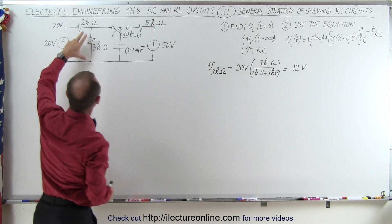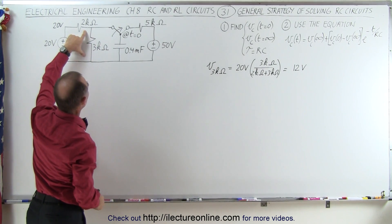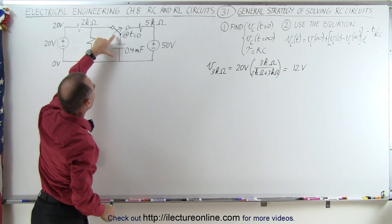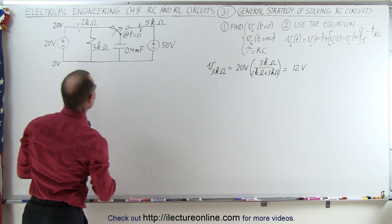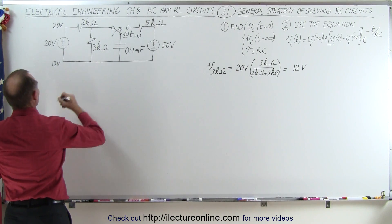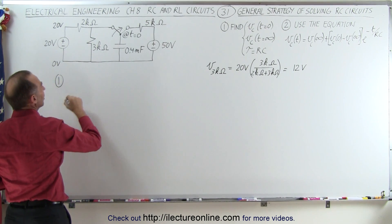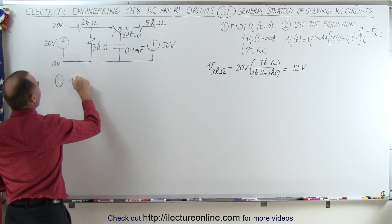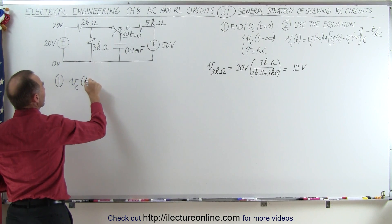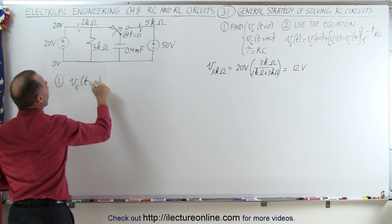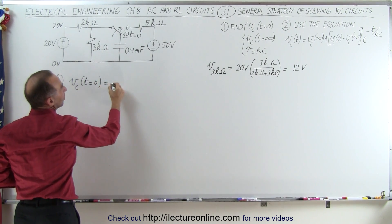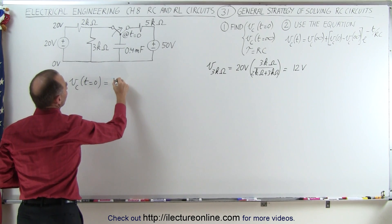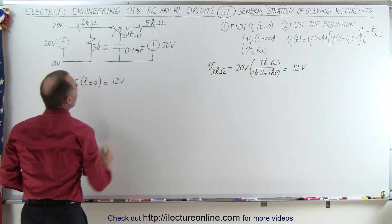That means if we have 12 volts across this resistor, we'll have a 12-volt drop across the capacitor. So for step one, V across the capacitor at time equals zero, which is the same as the voltage across the 3 kΩ resistor, equals 12 volts.